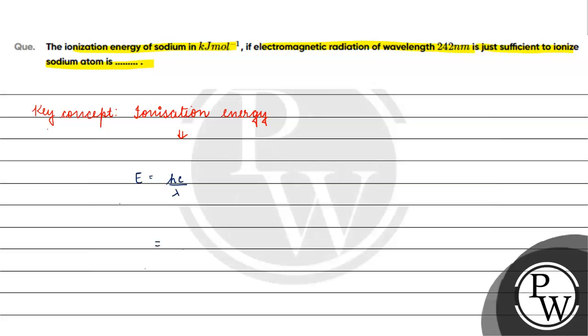H ki value kitna? H ki value is 6.626 × 10⁻³⁴ joule second. C ye ho jayega 3 × 10⁸ meter per second. Humare paas hai 242 nanometer. One nanometer is basically equals to 10⁻⁹ meters.